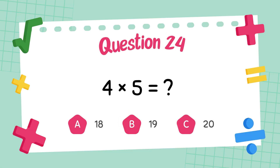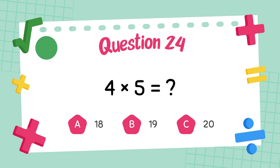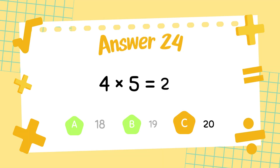What is four times five? The answer is twenty.